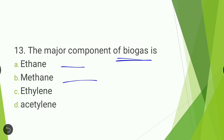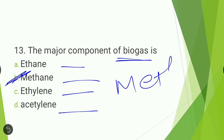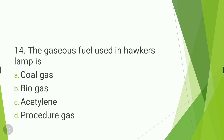Next question: the major component of biogas is — ethane, methane, ethylene, or acetylene? The answer is methane. Methane is the main component of biogas.